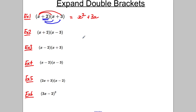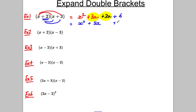Positive 2 multiplied by x is positive 2x, and positive 2 multiplied by positive 3 is positive 6. Then we collect like terms: we've got a positive 3x and a positive 2x, which combine to positive 5x. So the result is x² + 5x + 6.